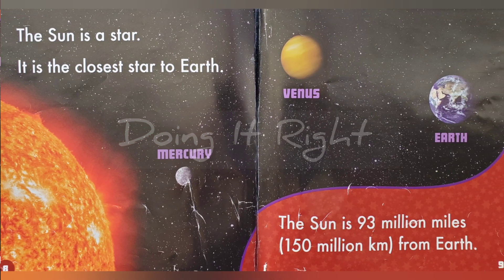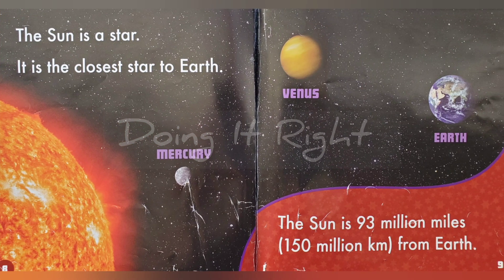The Sun is the star. It is the closest star to Earth. The Sun is 93 million miles — 150 million kilometers — from Earth.